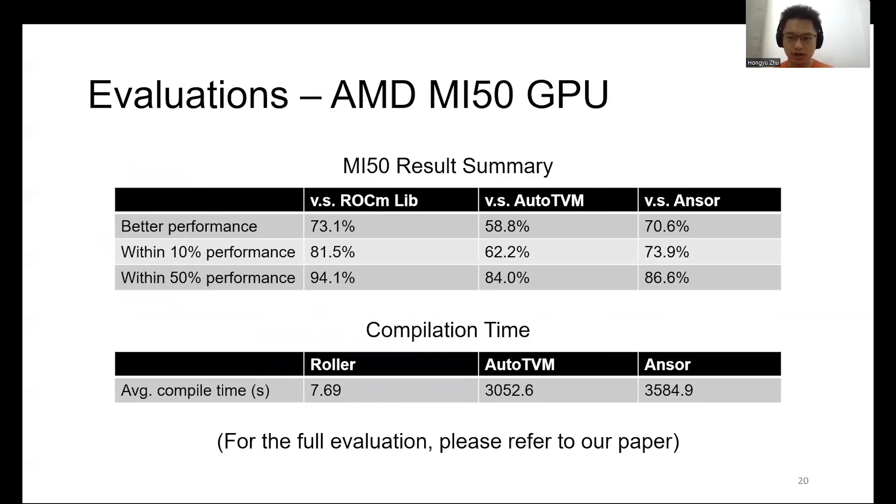We also validated Roller's performance on AMD MI50 GPU. Roller can produce faster results for about 73% of operators. This is much higher than CUDA libraries. The difference in compilation time is also very huge. Both AutoTVM and Ansor use close to one hour to compile a single operator on average, while Roller uses only 7.69 seconds. Besides the single operator results, we also evaluated end-to-end inference performance as well as the Graphcore IPU. Please refer to our paper for the full evaluation.